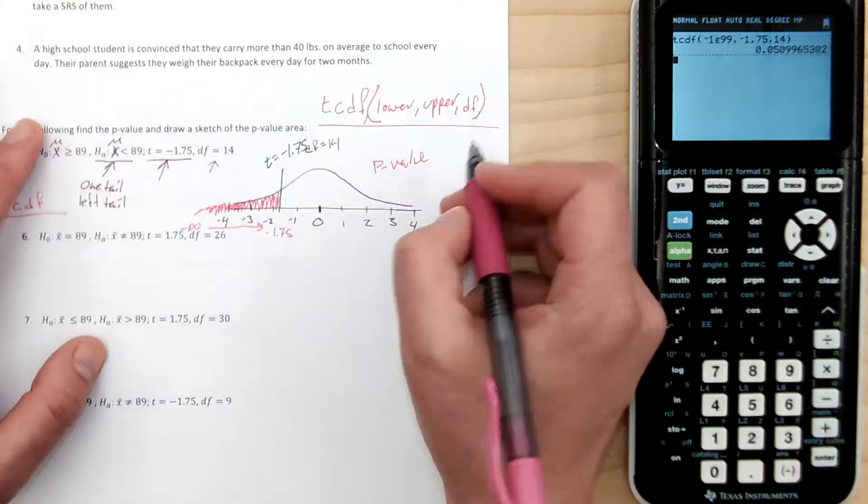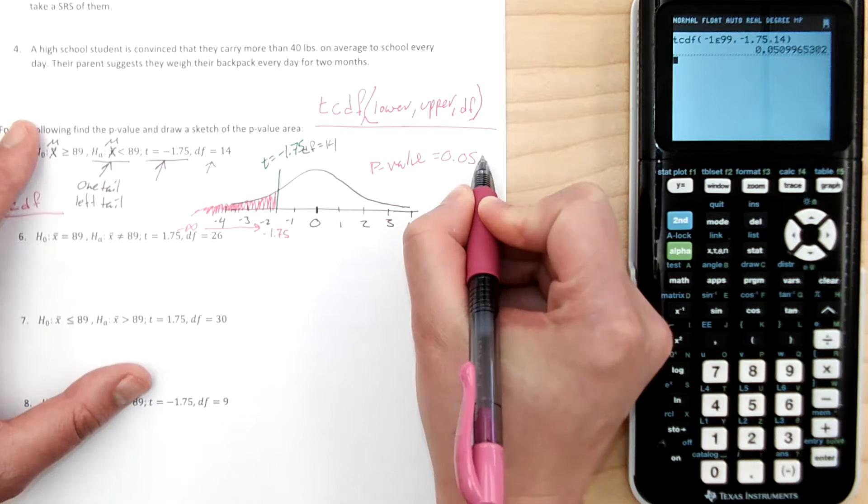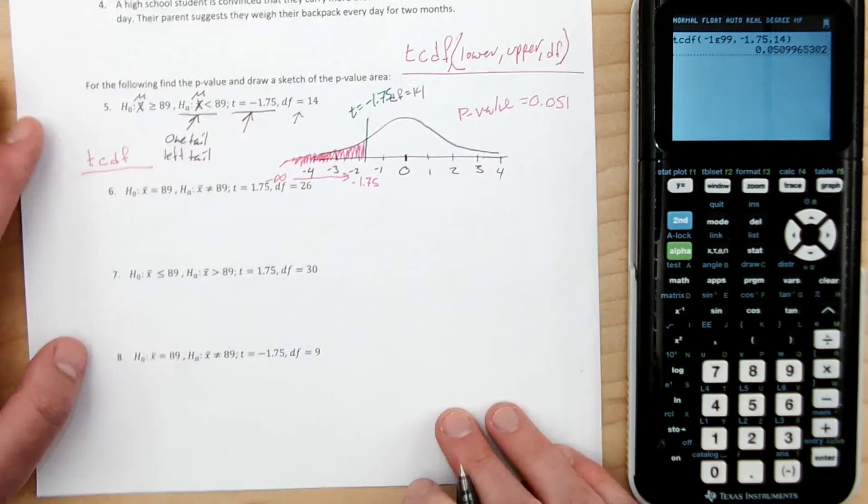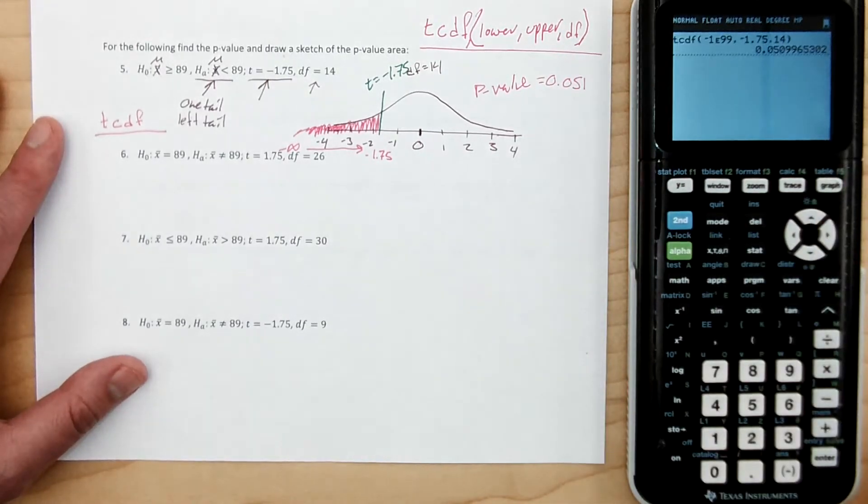And I'll see that my p-value in this case is 0.051. I'll round that to 0.05. Okay. And that's all that there is for this.